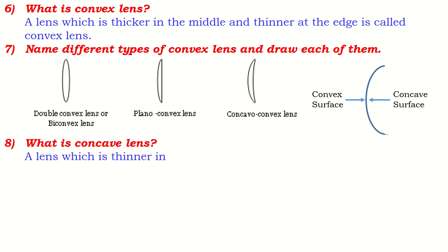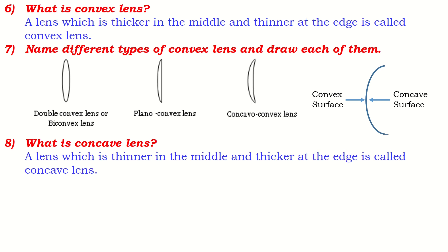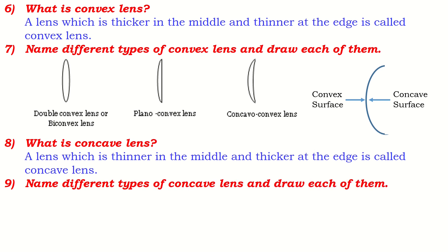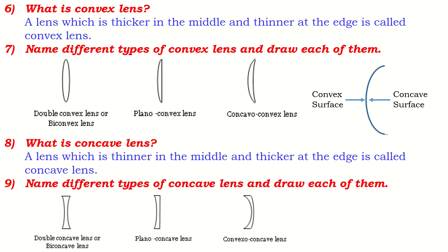What is a concave lens? This is just the opposite of convex lens. A lens which is thinner in the middle and thicker at the edge is called a concave lens. Name different types of concave lens and draw each of them. We can identify them by looking at the middle part and its edge. When both surfaces are concave, it is a double concave lens or bi-concave lens. If one surface is plane, it is a plano-concave lens. If one surface is convex but the middle part is still thin, it is a convexo-concave lens.